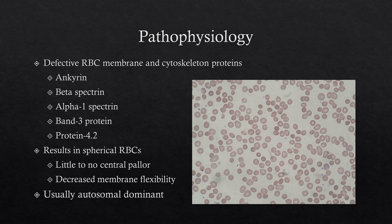It's very low chance you'll be asked the specific proteins on Step, but it wouldn't hurt to memorize them. The decreased membrane flexibility causes these RBCs to become spherical. On the peripheral blood smear you'll see uniformly spherical-shaped cells with little to no central pallor, in contrast to normal RBCs which are biconcave discs and have some central pallor. Usually this is an autosomal dominant disease and it typically presents fairly early in life.